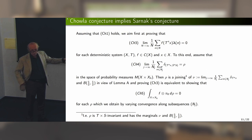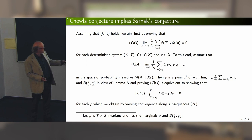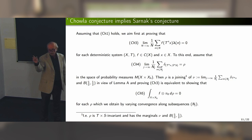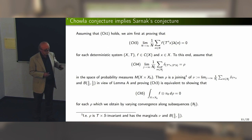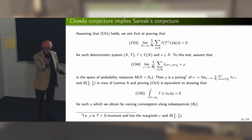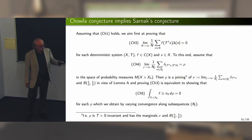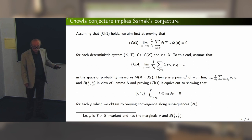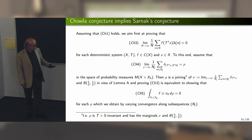More can be said: by looking at functions depending only on the first or second coordinate, we can say something about the marginals. This gives something like a joining — a measure which is invariant and has the correct marginals. On the second coordinate, since we assume Chowla holds, the Liouville function is generic for the Bernoulli measure, so the second marginal must be the Bernoulli measure. On the first coordinate I obtain some T-invariant measure nu. Since T is topologically deterministic, by the variational principle the measure-theoretic entropy of nu is also zero — so we have a measure-theoretically deterministic system.